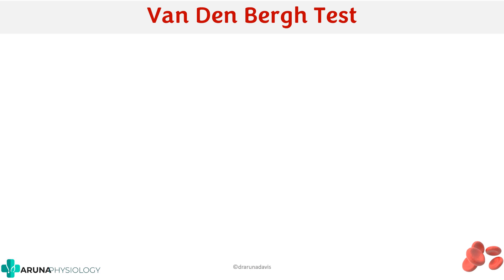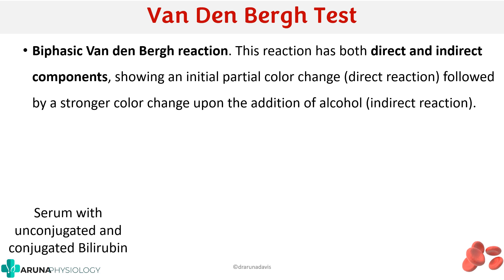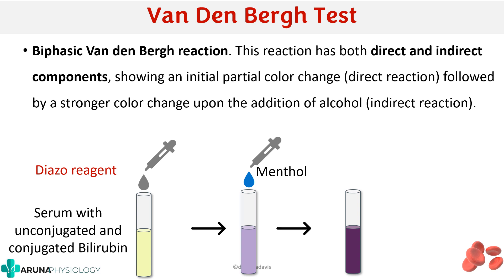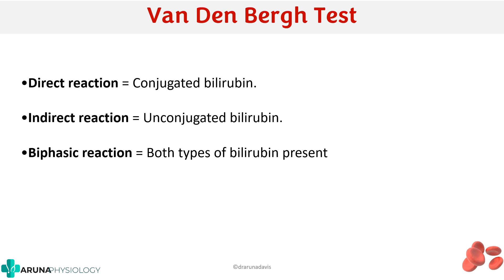A biphasic Van den Bergh reaction contains both direct and indirect components: adding the diazo reagent gives a partial color change, and then adding methanol gives a stronger color change, indicating both conjugated and unconjugated bilirubin are present. In summary: a direct reaction means conjugated bilirubin is present, an indirect reaction means unconjugated bilirubin is present, and a biphasic reaction means both types are present.